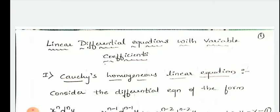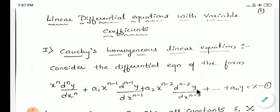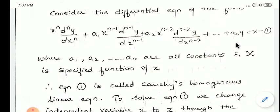Now we look into how to solve Cauchy's homogeneous linear equation. Consider a differential equation of the form x^n (d^n y/dx^n) + a1 x^(n-1) (d^(n-1)y/dx^(n-1)) + ... + a_n y = X, called equation 1. Here a1, a2, ..., a_n are constants and the RHS term X is a function of x. This equation is called Cauchy's homogeneous linear equation.